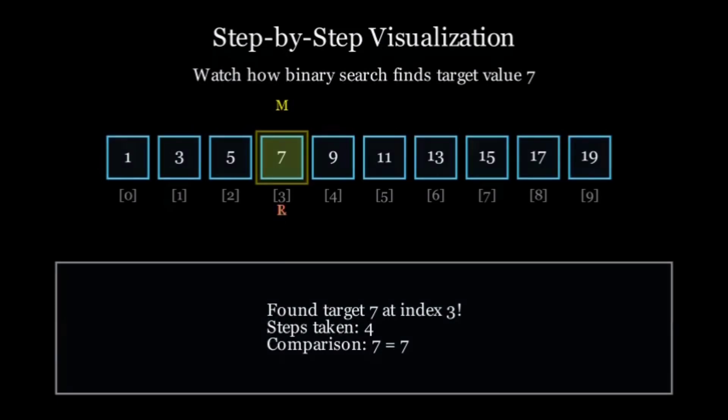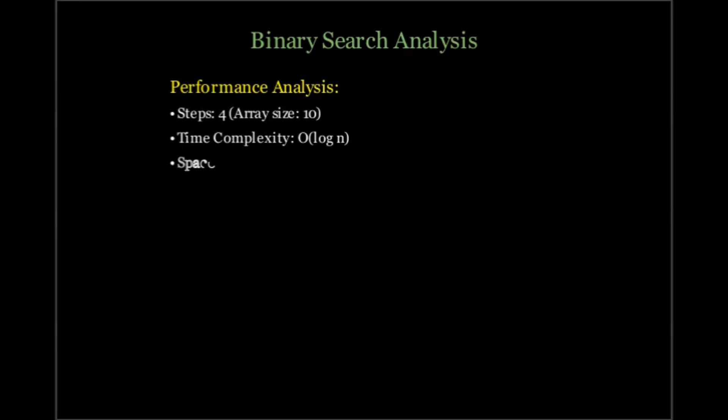It's fast and efficient. So what did we learn today? Binary search is a divide and conquer algorithm that works on sorted arrays. It has a time complexity of O(log n), making it super efficient for large datasets. It's used in real world applications like dictionary lookups, database indexing and searching sorted lists.